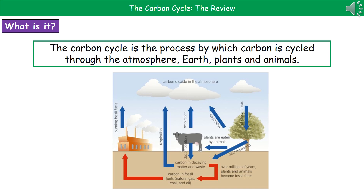From there, we can see there are two arrows. The first one is that the plants are eaten by the animal, so that will transfer the carbon from the plant to the animal. And the second one is decomposition, which will occur if the plant dies.